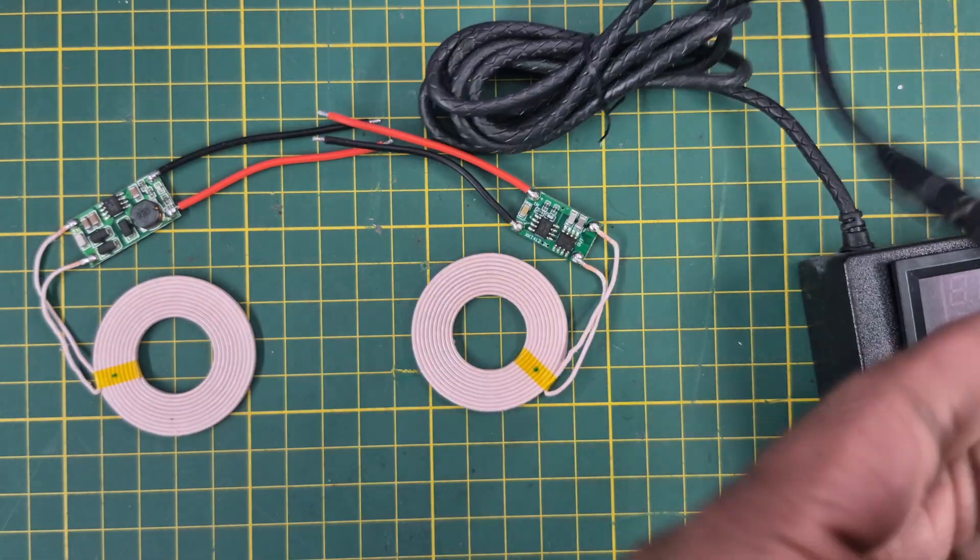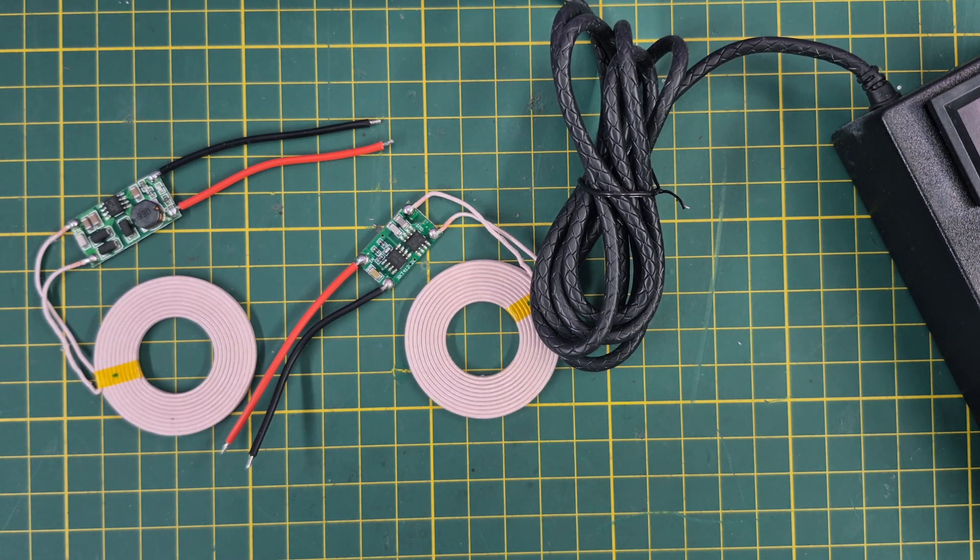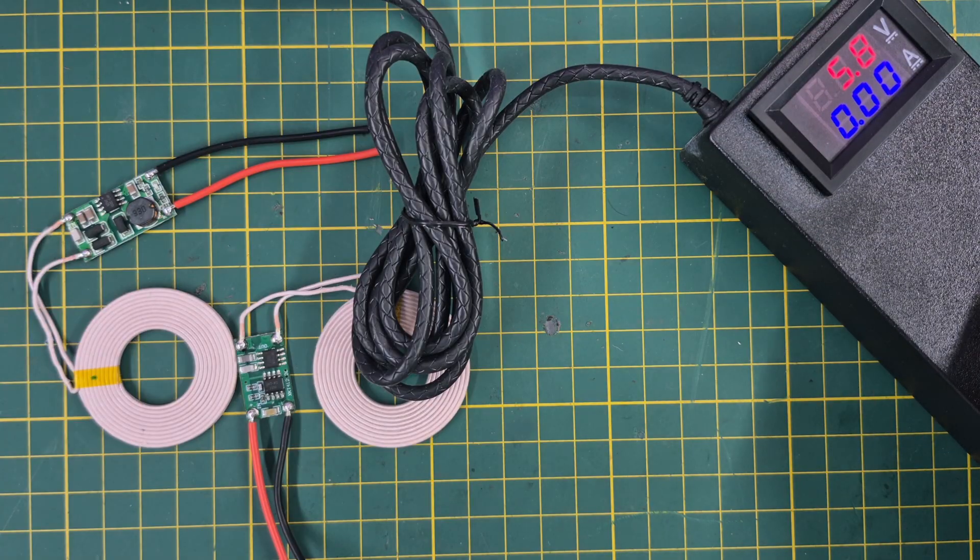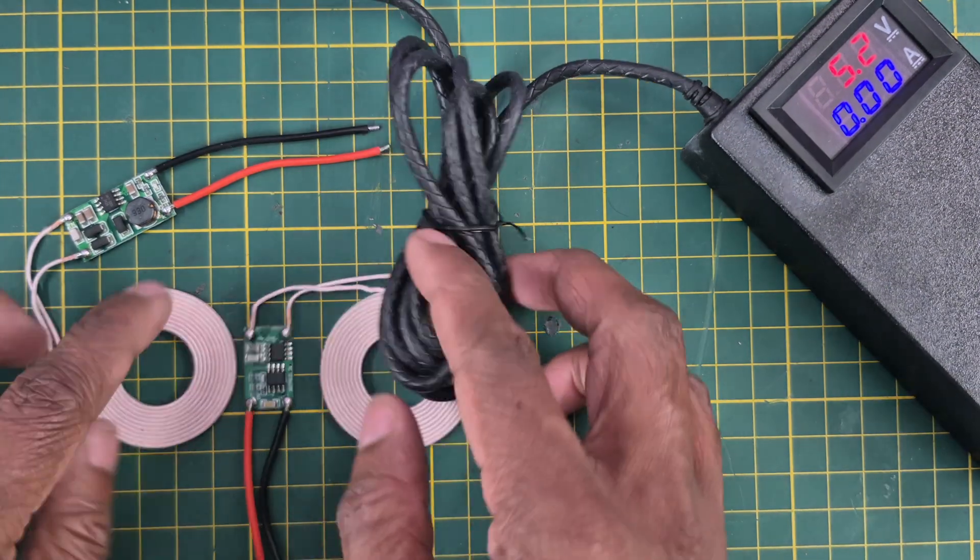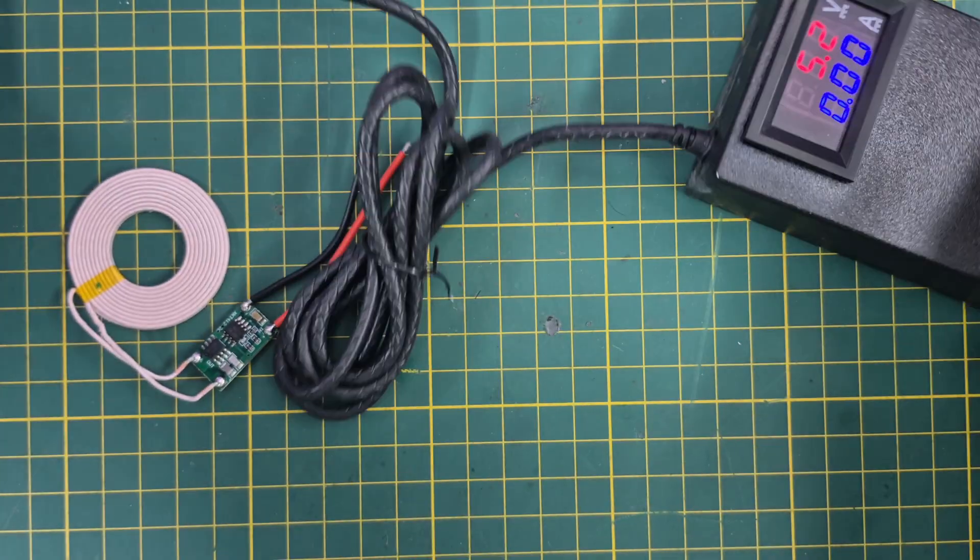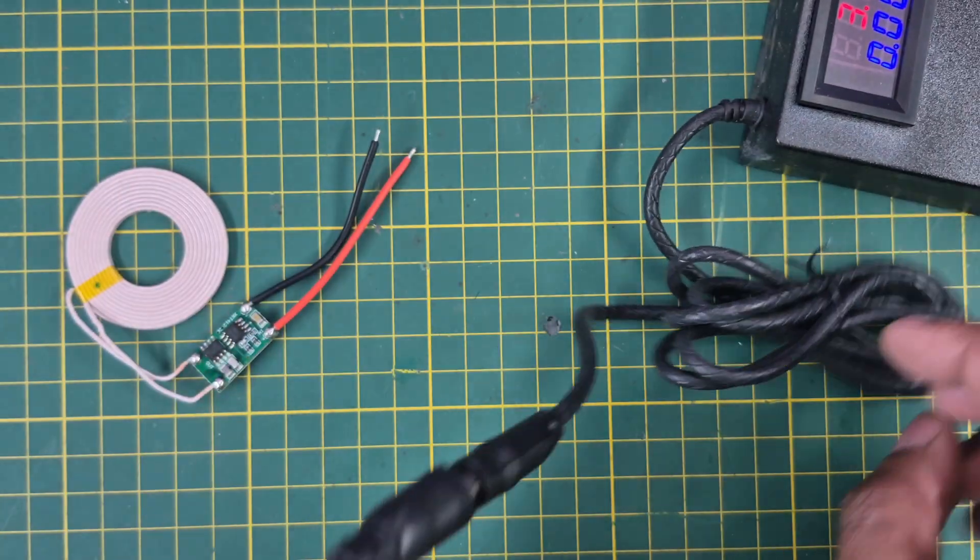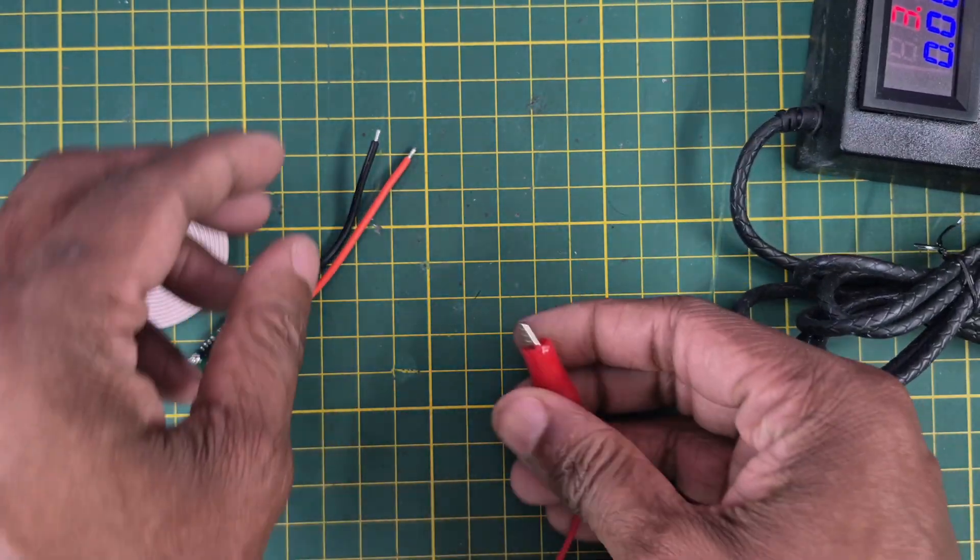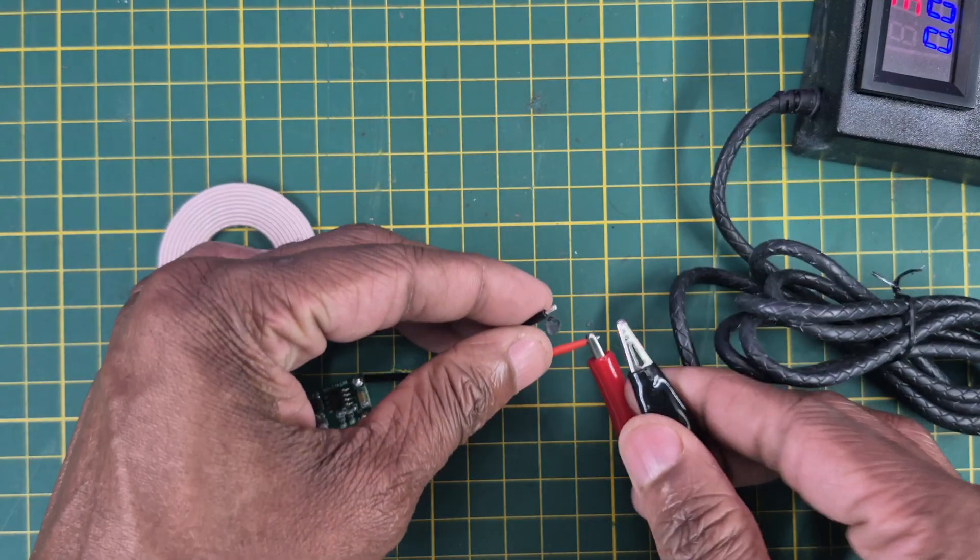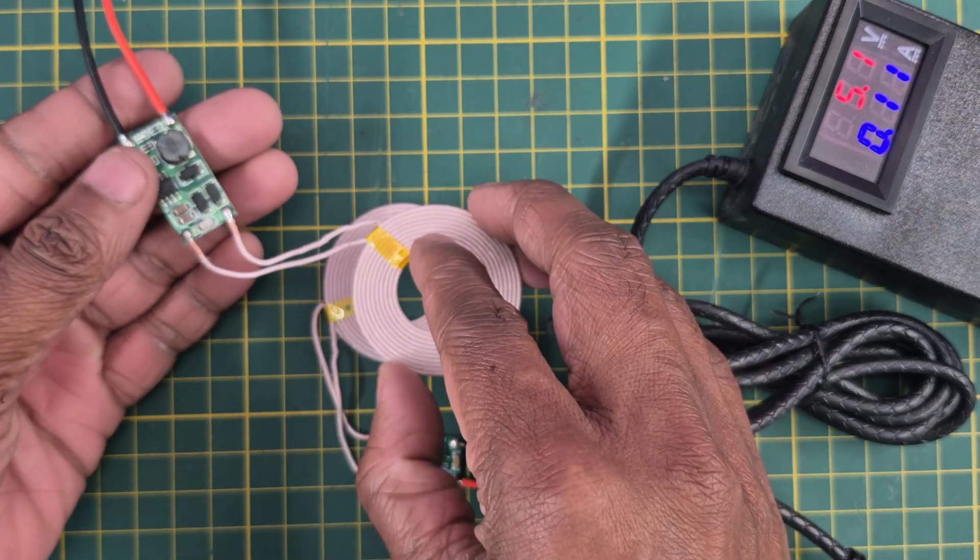Here I will take this power supply and I'll set this to 5 volts. This is the transmitter. If I am taking this receiver module near to the transmitter...